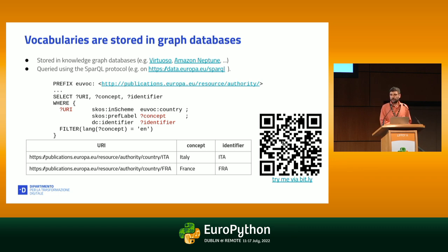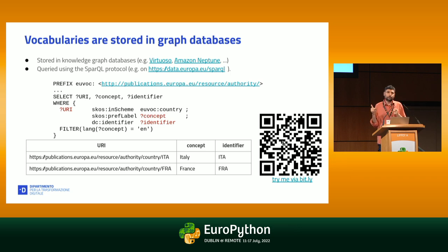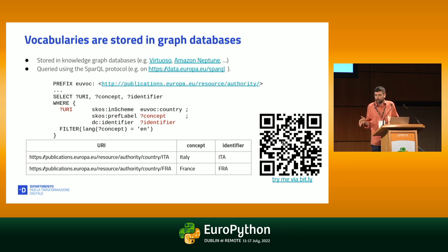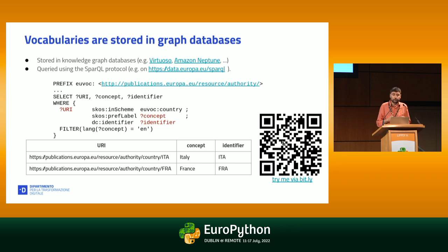Vocabularies are stored in graph databases. You can use Fuseki, Amazon Neptune, and query those databases using the SPARQL protocol. In this case I have the vocabulary we've seen before, I make a query where I specify a list of predicates that should match — the URI should be in the scheme of the Eurovoc country vocabulary, they should have a concept using a preferred label, and they have an identifier. I extract a simple table with the URI, the concept name (Italy, France), and the identifier.